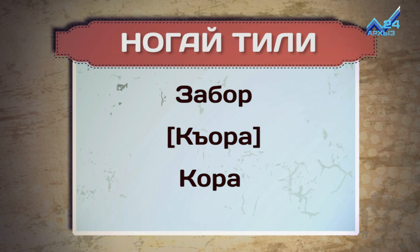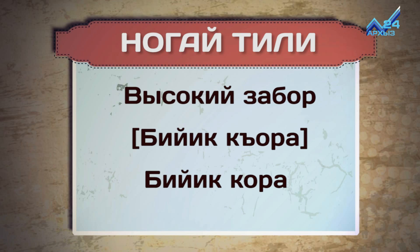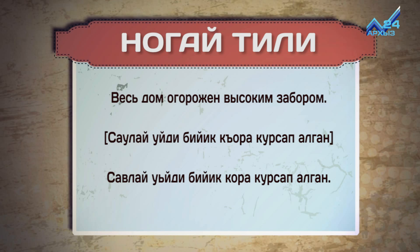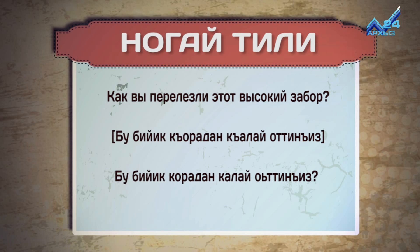Забор — Кора. Высокий забор — Биык Кора. Вес дом огорожен высоким забором. Саулай үйді биыык кора күрсап алған. Как вы перелезли этот высокий забор? (The whole house is surrounded by a high fence. How did you climb over this high fence?)